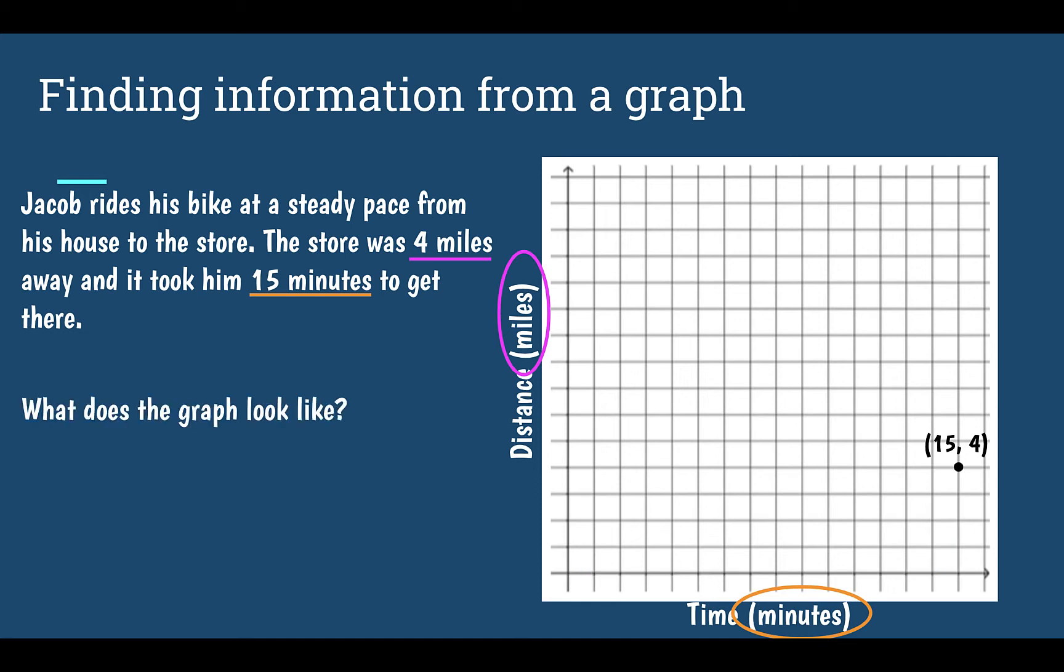What would this graph look like? If it was a proportional situation we know a couple things. First we know that it has to go through that point fifteen four because it told us in the problem that he was four miles away after fifteen minutes. But since it's proportional we also know that it must be a straight line. And it has to go through the origin. So those three things help tell us what the graph would look like.